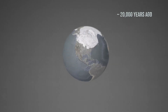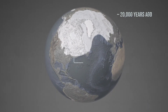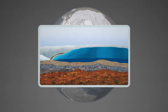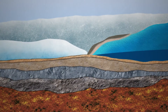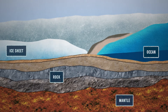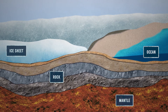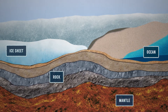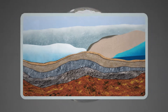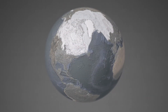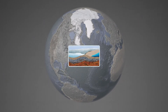Around 20,000 years ago, ice sheets covered large areas of our planet. In many places, the weight of these massive ice sheets pressed down on the planet's crust and the viscous mantle underneath. This weight caused the surrounding land to rise and the sea levels to fall relative to that rising land. Over time, these ice sheets began to retreat as part of Earth's natural cycle of glaciation and melt.